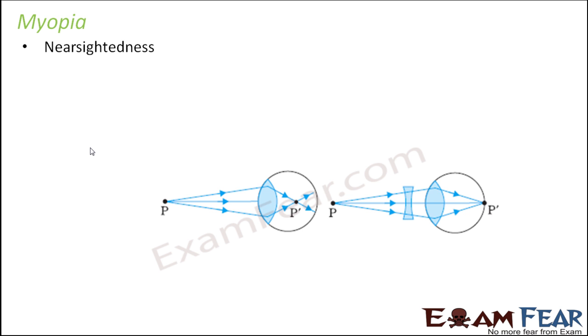They have sight only for near objects. If objects are located far away they are not able to see it. This is also very common with elderly people. Many people can't see objects which are very far away but they can see objects when they are closer to them. Why does this happen? This happens because the image is not formed on the retina.